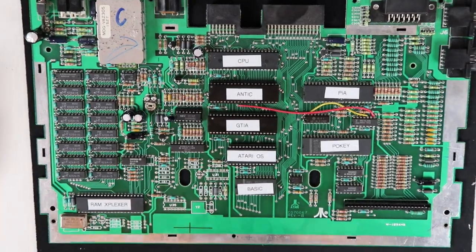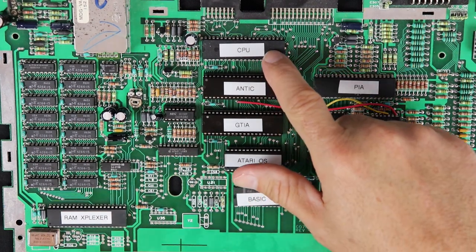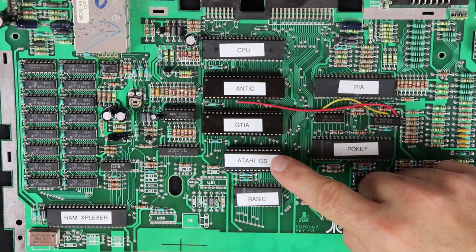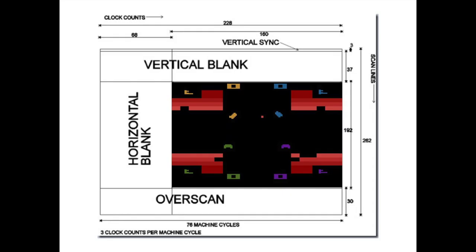The ANTIC chip is busy working with the GTIA to draw the screen while the CPU handles computations required by the software. This was a huge advance over the Atari 2600, which lacked a graphics chip, resulting in a CPU burdened with drawing the screen one scan line at a time. The only time the 2600 CPU had for in-game computations was during the horizontal blank — a brief pause at the end of each scan line — and the vertical blank, when the last of the 192 scan lines was completed.